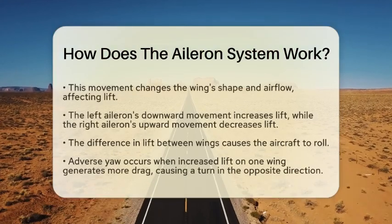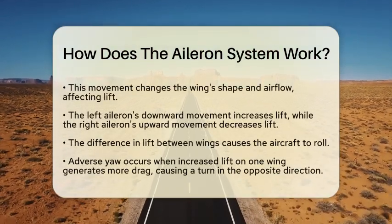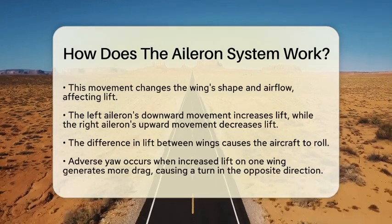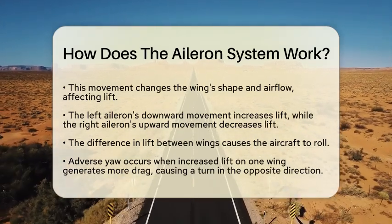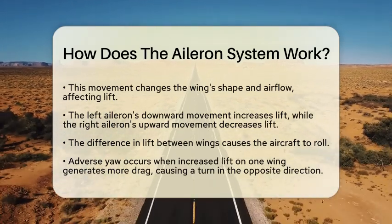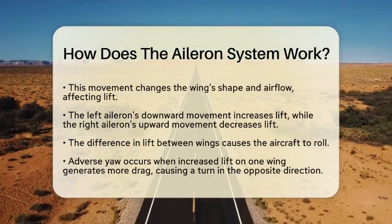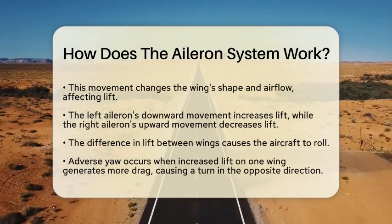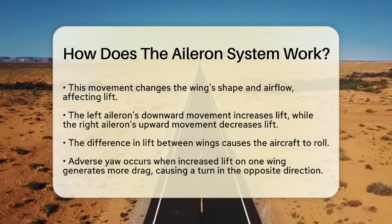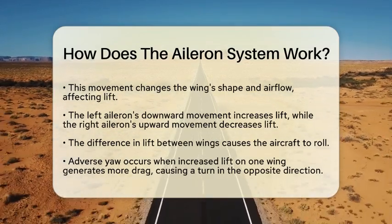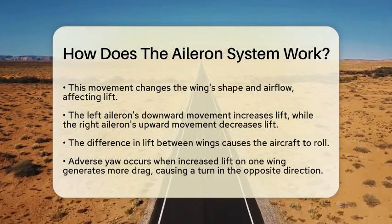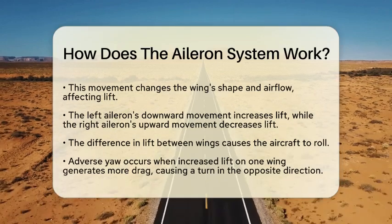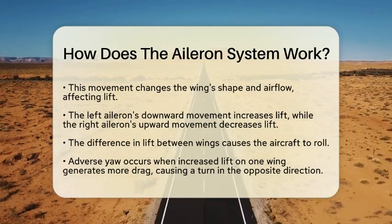Why does this happen? The movement of ailerons changes the shape of the wing, which in turn affects the airflow over it. When the left aileron moves downward, it increases the angle of attack of that wing, resulting in increased lift. On the other hand, when the right aileron moves upward, it reduces the angle of attack, decreasing lift. This difference in lift between the two wings causes the aircraft to roll.